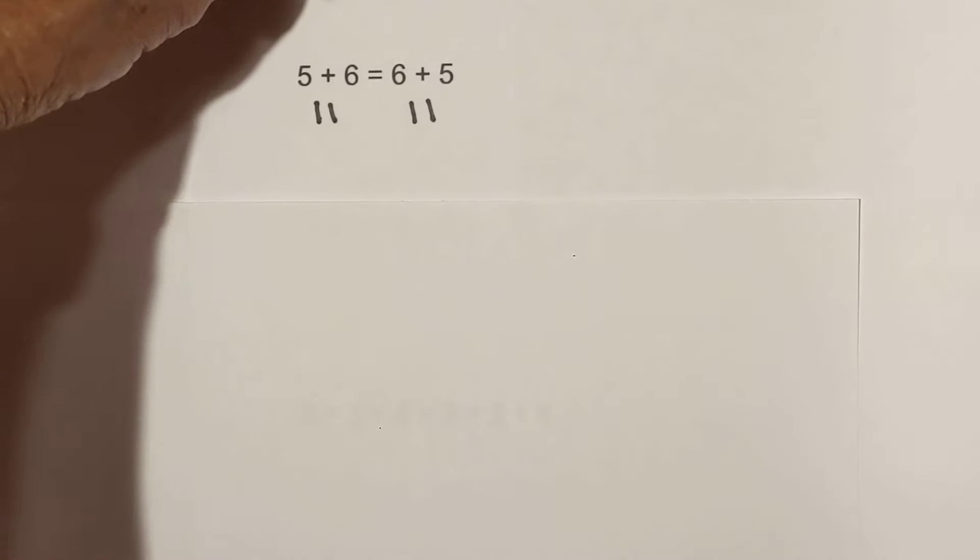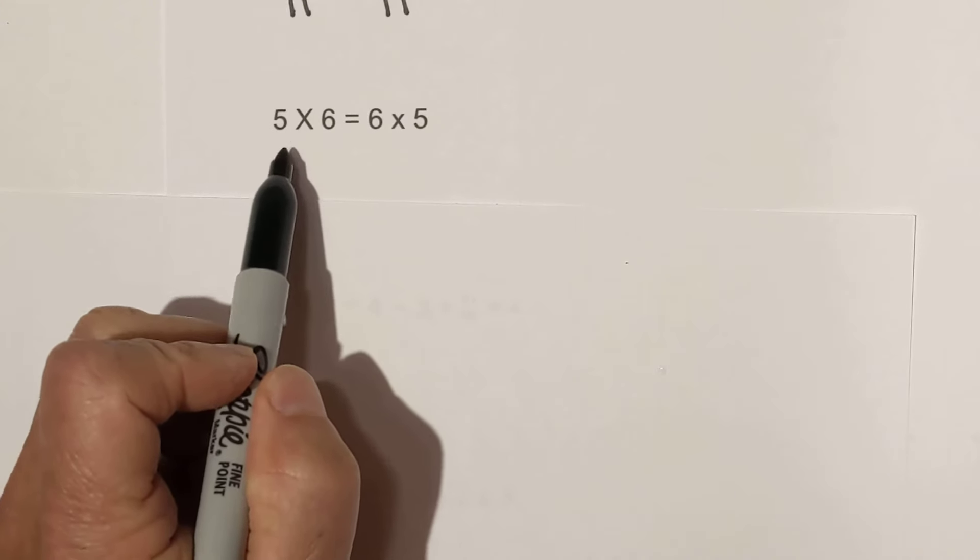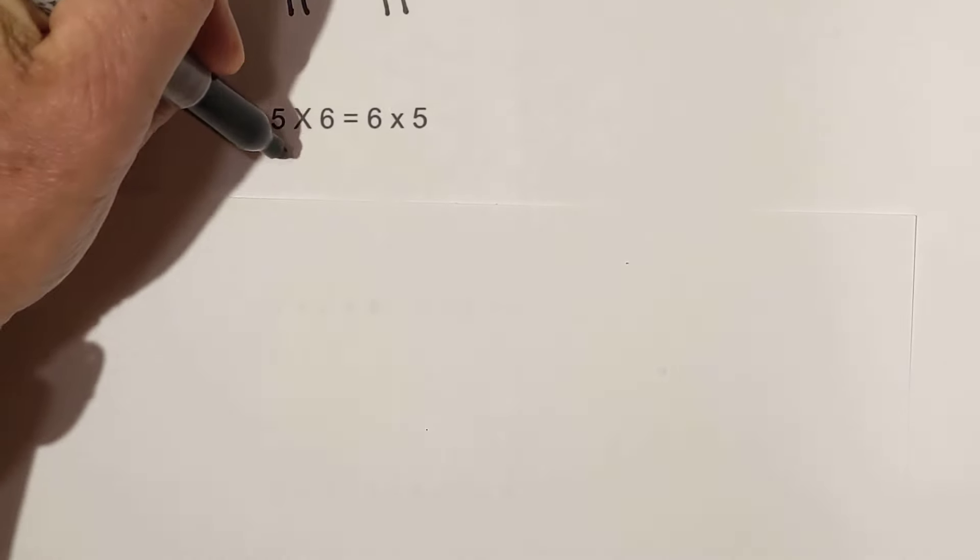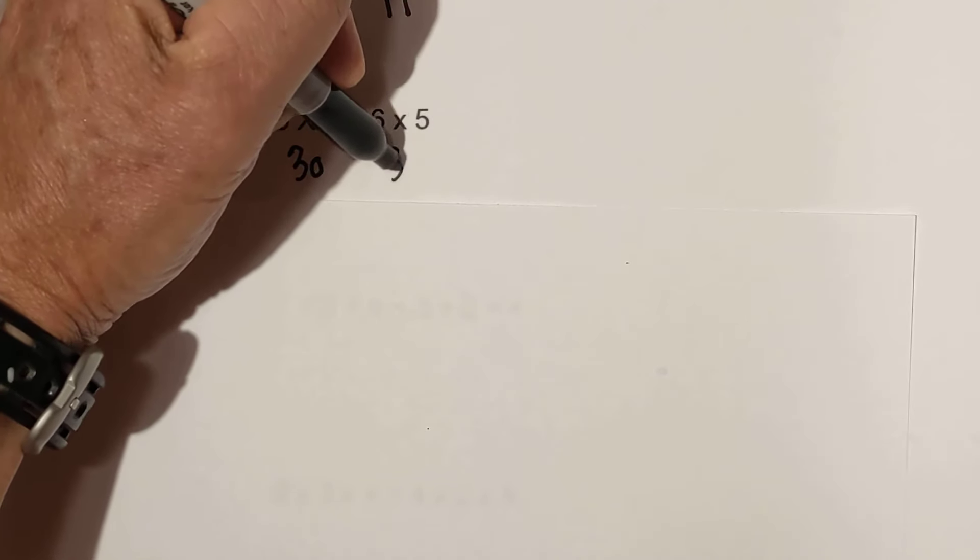Let's look at multiplication. Let's move this up. We have five times six. The six has commuted to the front. The five has moved to the back. Five times six is thirty. Six times five is thirty.